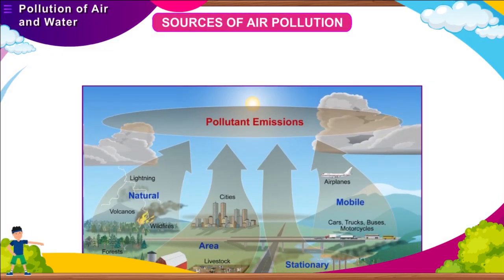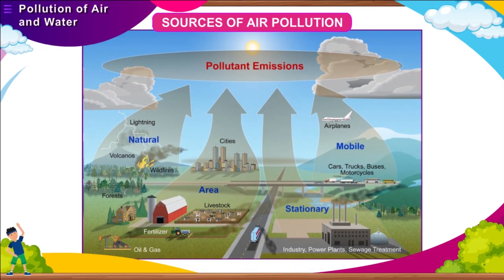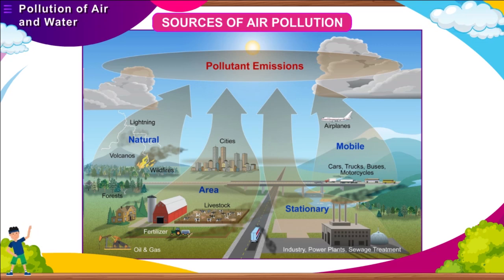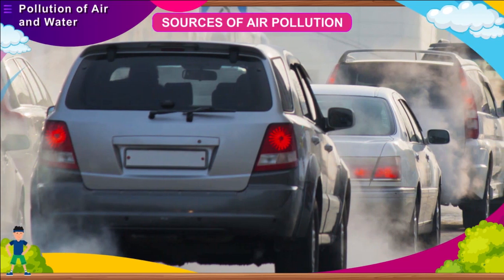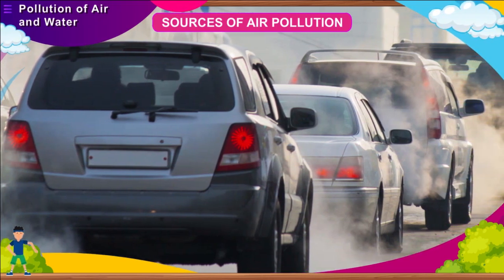Sources of air pollution. The substances which contaminate the air are called air pollutants. There are various sources of air pollution. Sometimes, such substances may come from natural sources, like smoke and dust arising from forest fires or volcanic eruptions. Pollutants are also added to the atmosphere by certain human activities. These include smoke from burning fuel released by cars, scooters and other vehicles.